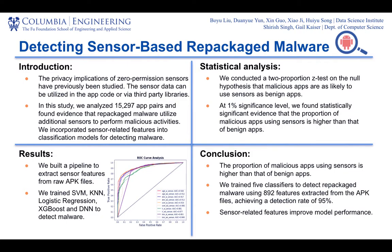Mobile malware detection can be a challenging task, especially when malware shares substantial parts of the code structure with their benign counterparts. In our study, we investigated repackaged malware detection. Repackaged apps come with a combination of benign and malicious features, which makes the detection difficult. Previous research has shown malware introduces code modifications to embed malicious activities.